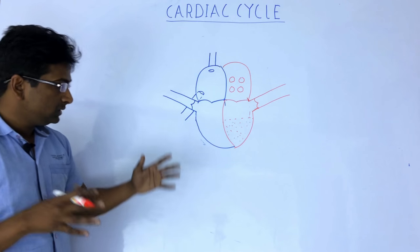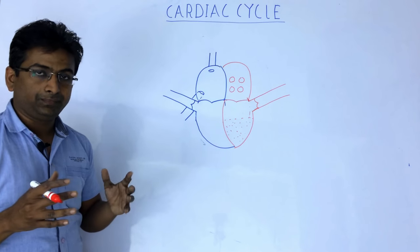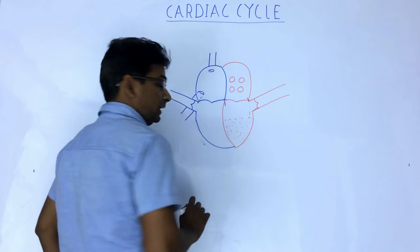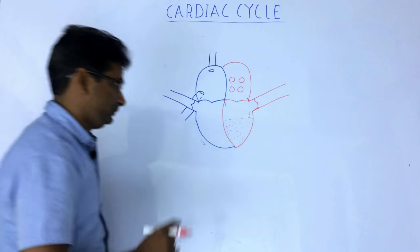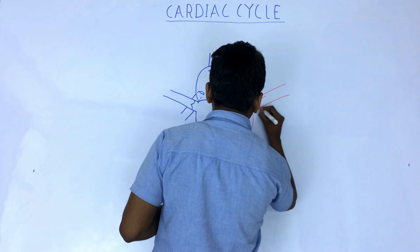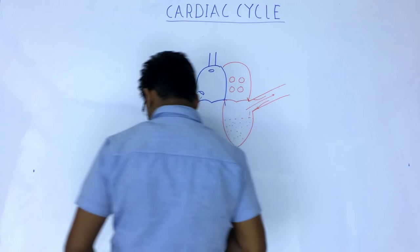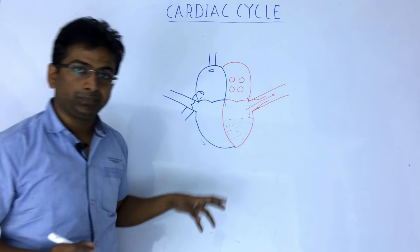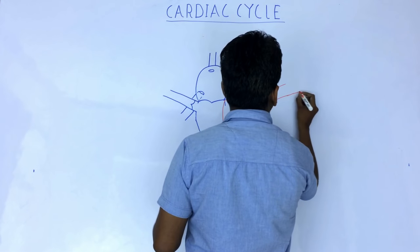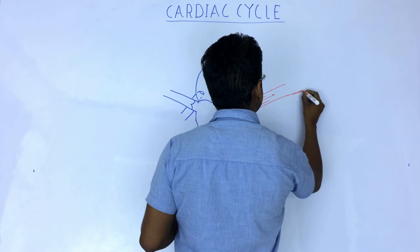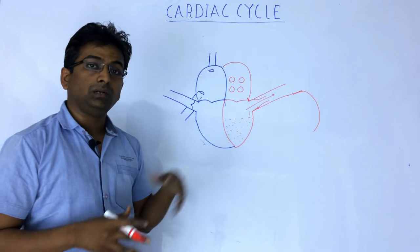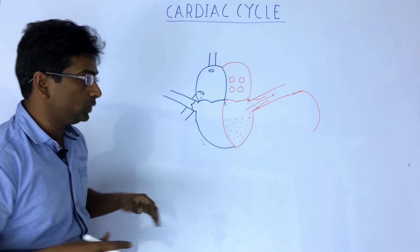Then the ventricle contracts, and blood from the left ventricle is ejected into the aorta. This is oxygenated, or pure, blood. The aorta carries this blood to the whole body — through its branches to both the upper and lower body.